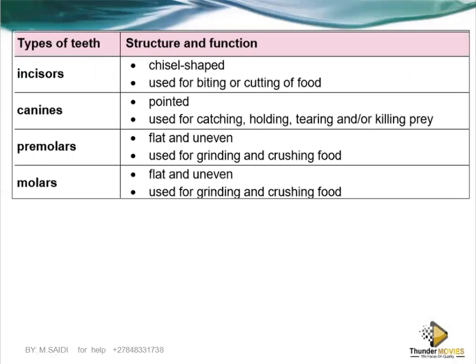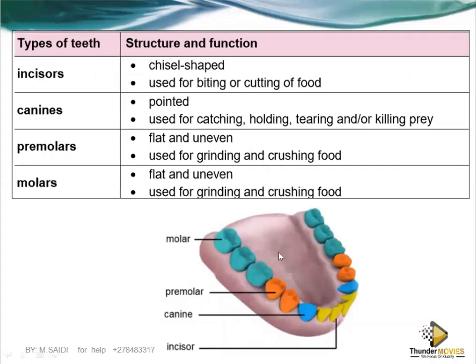Different tooth shapes have specific functions. Incisors are the front teeth, very important for cutting food. Then we have canines — the sharp ones — very important for tearing. When you want to tear meat, you position it at the canine to tear it. Then we have premolars, very important in crushing food. Molars have a large surface area so that a lot of food can be crushed in a short period of time. The two premolars and three molars each serve these roles.